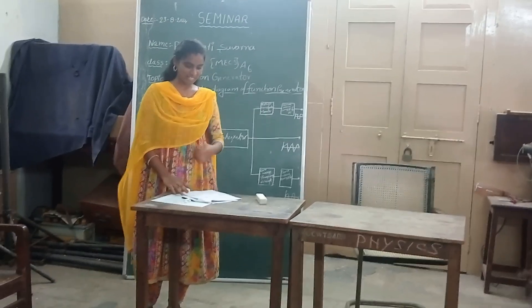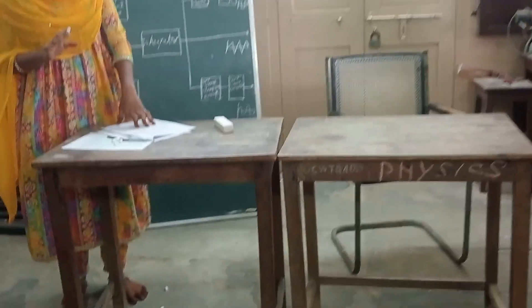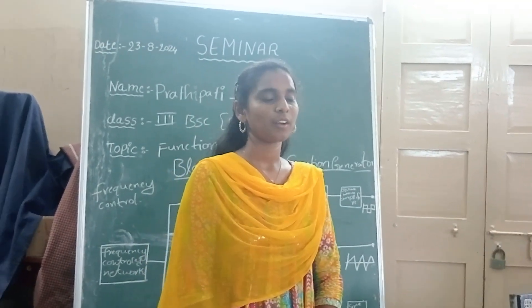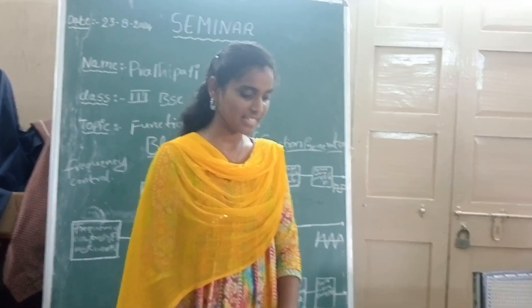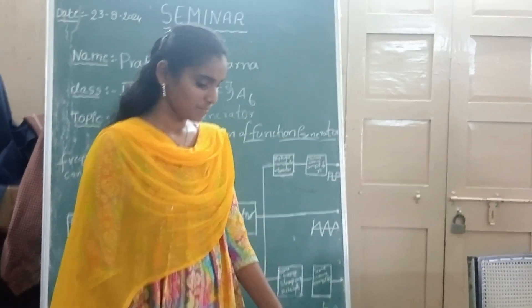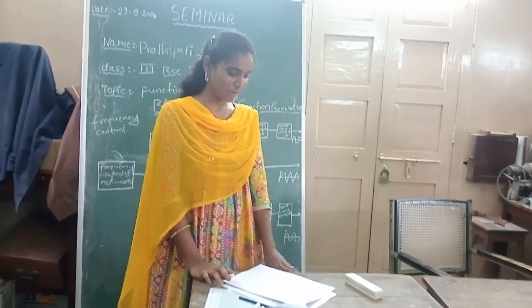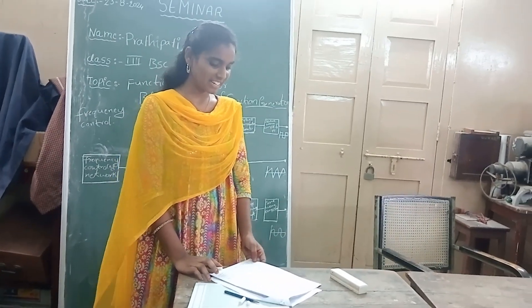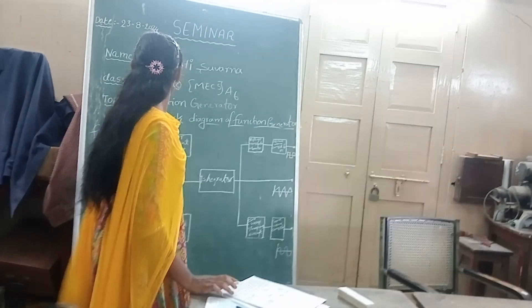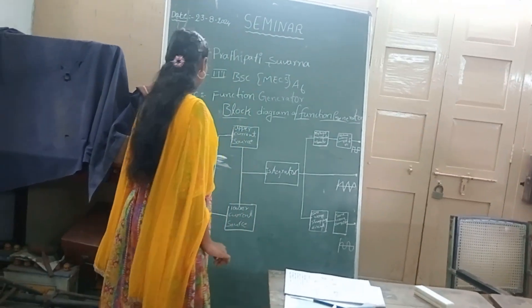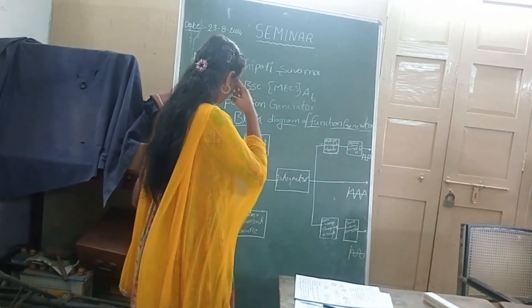The frequency range is 0.01 Hz to 100 Hz. The frequency controller network controls the frequency of the generator by using a knob, and is called a frequency generator. Now, the block diagram of the Function Generator.